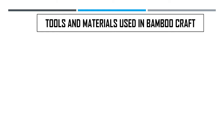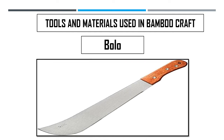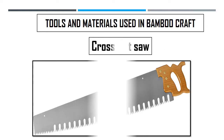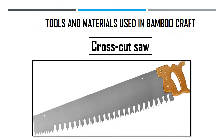The first tool in making a bamboo craft is the bolo. It is a long single-edge knife used to cut wood and similar materials. It is an important tool in making bamboo crafts, used to cut the bamboo. The next tool is the cross-cut saw, a hand saw used for cutting bamboo across the grain.